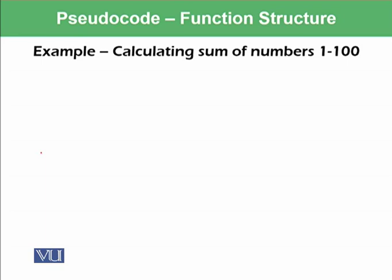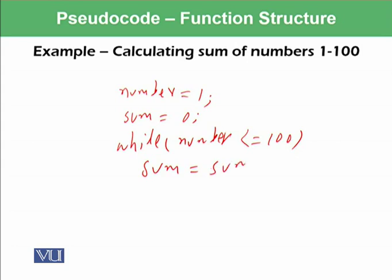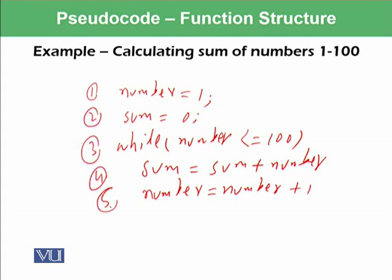So let's have another example that we want to calculate sum of numbers from one to hundred. As we did it last time, number is assigned by one, sum is assigned by zero while number is less than equal to hundred. Sum is assigned by sum plus number and number is assigned by number plus one. So we know this code. This has one, two, three, four, five statements.